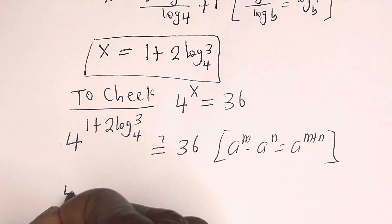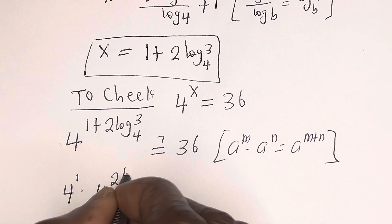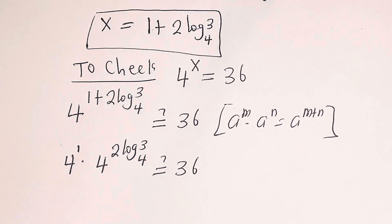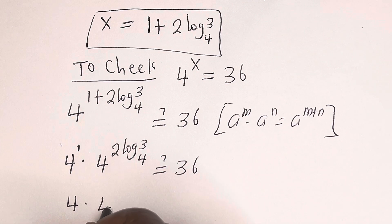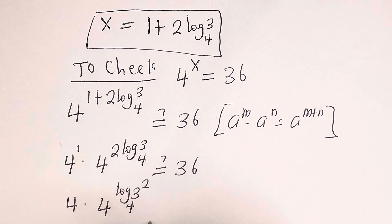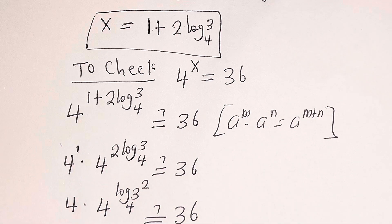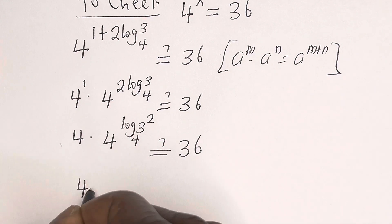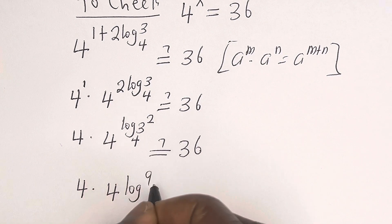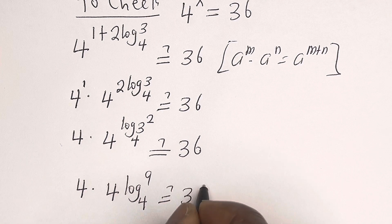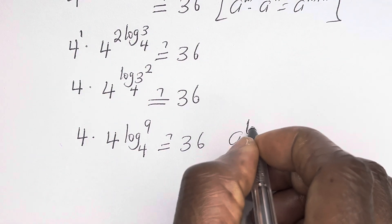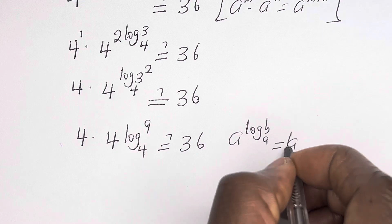This can be written as 4 raised to power 1 multiplied by 4 raised to power (2 log 3 base 4) must equal 36. Then 4 raised to power 1 is 4, multiplied by 4 raised to power log(3²) base 4 must equal 36. Note: 4 multiplied by 4 raised to power log 9 base 4 must equal 36. And if you have a raised to power log b base a, this is equal to b.